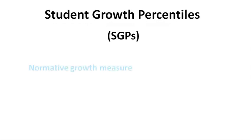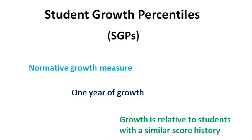Student Growth Percentiles are a normative measure of student growth. SGPs quantify the growth an individual student made in one year relative to all other students in Washington State with a similar score history on state assessments.